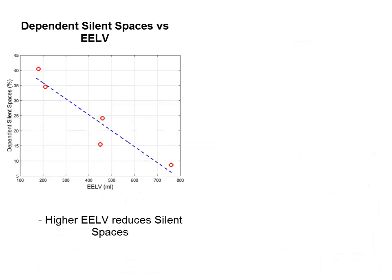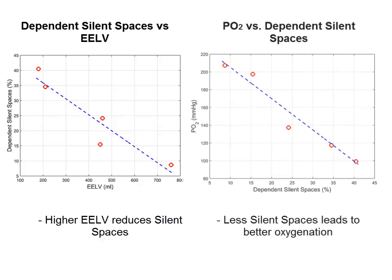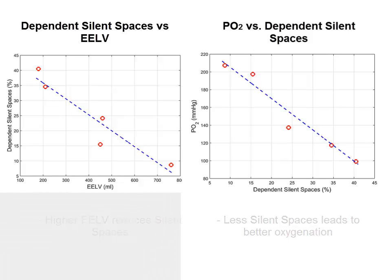Here we are presenting the rather strong correlation between the changes in the dependent silent spaces and the end expiratory lung volume as measured by the ventilator. The higher the end expiratory lung volume, and thus the functional lung size for ventilation, the lower the silent spaces. Furthermore, the partial pressure of oxygenation improves as the silent spaces become smaller. The partial pressure of oxygenation of 100 mmHg doubles as silent spaces decrease from around 40% to 10%.